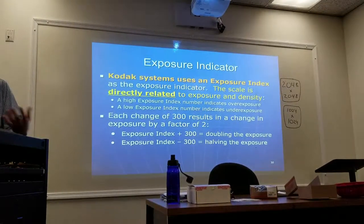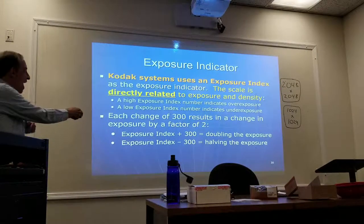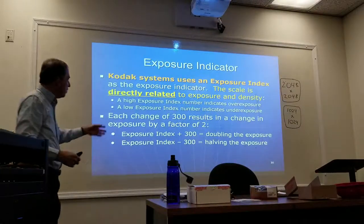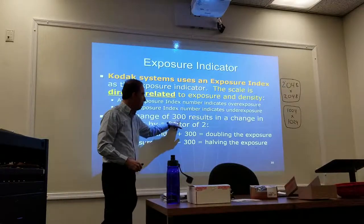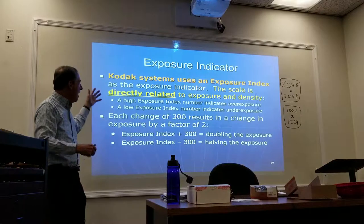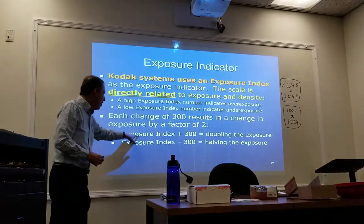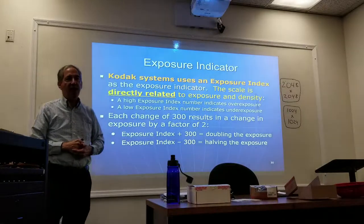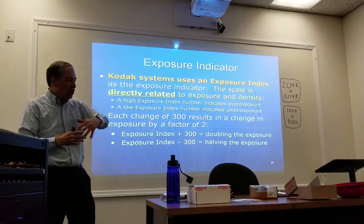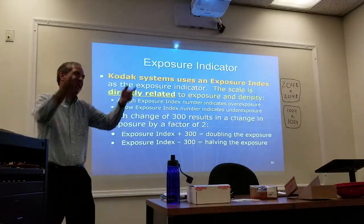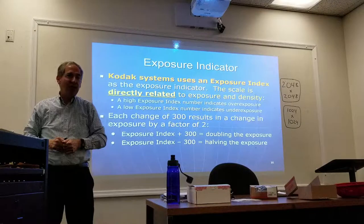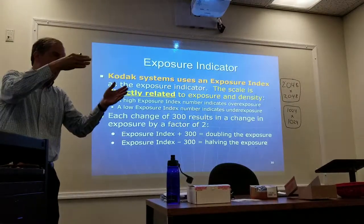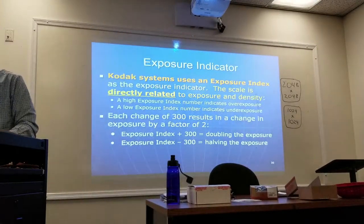Kodak uses an Exposure Index, which is directly proportional to exposure density — a high Exposure Index means overexposure, a low one means underexposure. Here the change needed is 300: adding 300 to the Exposure Index is the equivalent of doubling it, subtracting 300 is the equivalent of halving it. Sometimes an image is so far out that you have to go through a couple of steps — it's four times as much, not just doubled.